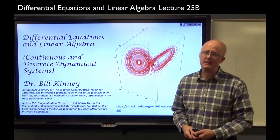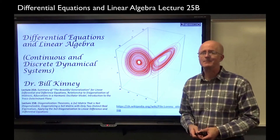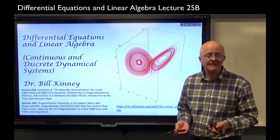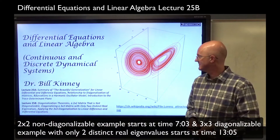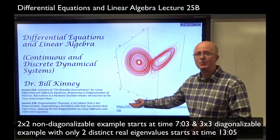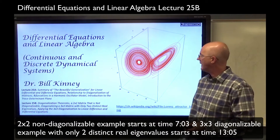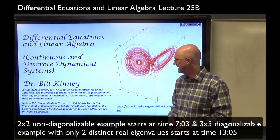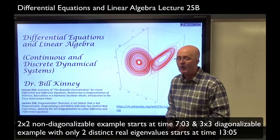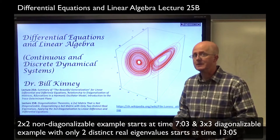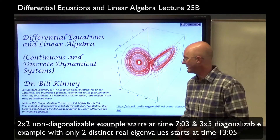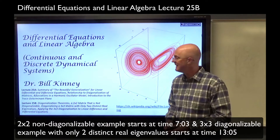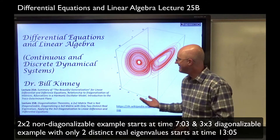In lecture 24b, we looked at the very important concept of diagonalization of a square matrix. It's often possible, but it's not always possible. We continue with that here in lecture 25b. I will review the diagonalization theorems, our main theorems from 24b. We'll look at a 2×2 example where it's not diagonalizable, which is actually the one I mentioned at the end of 24b. We will look at a 3×3 example and look at the details of diagonalizing that.